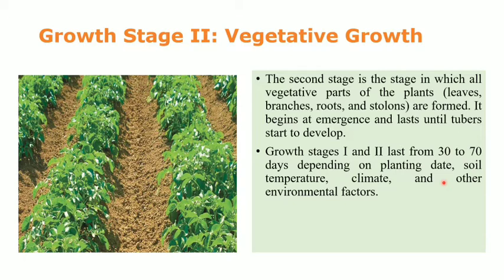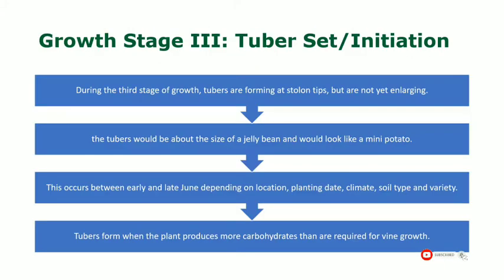These are some of the factors affecting the vegetative growth phase. The third stage is tuber initiation, where tubers form at the stolon tips but are not yet enlarging. The tubers would be about the size of a jelly bean and look like a mini potato. This occurs between early and late June depending on location, planting date, climate, soil type, and variety.